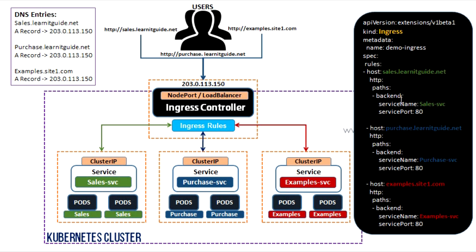For example, if someone accesses sales.lanetk.net, the traffic goes to the sales service. If someone accesses purchase.lanetk.net, it redirects to purchase-svc. Similarly, examples.site1.com redirects to examples-svc. This is a basic ingress rules example demonstrating how traffic is directed to the correct backend service.